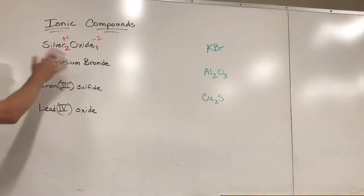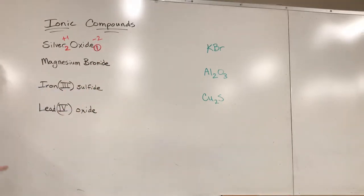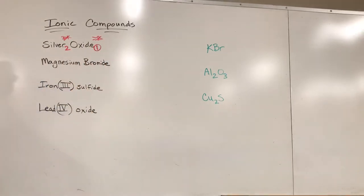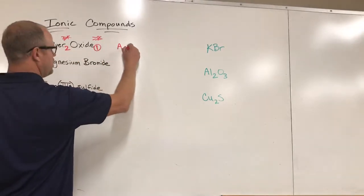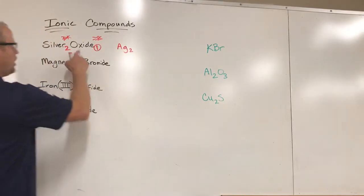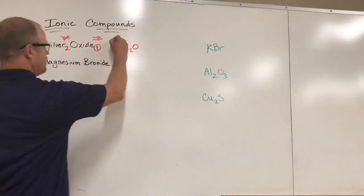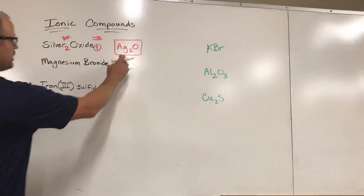We don't write it as two to one. We basically take these ones and we know they're there but we just don't write them. There's nothing there - we assume there's a one. We also don't write the charges. They're there to help us figure it out, but the final result is going to be two silver atoms to one oxygen atom. So I would look up silver and find that it's Ag, and there's two of those. Oxide is oxygen, and there's only one of those. This is the correct formula for silver oxide.